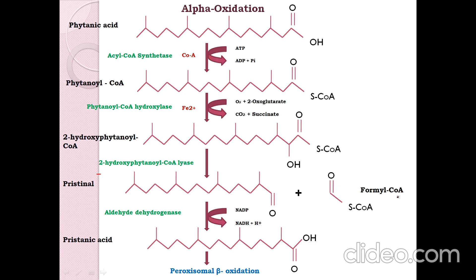The formyl CoA which is released from this will eventually form carbon dioxide and it is released. Pristinal is further converted into pristanic acid by the enzyme aldehyde dehydrogenase. Here NADP is converted to NADPH.